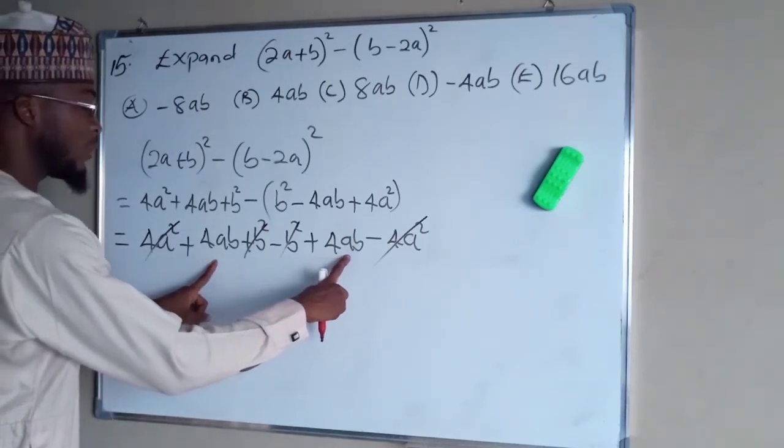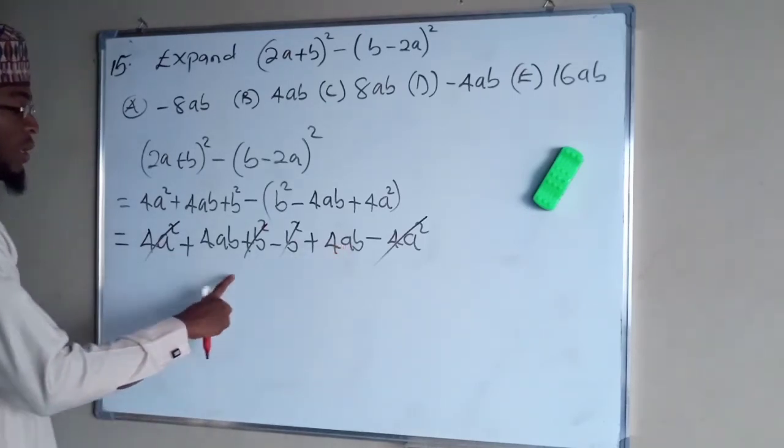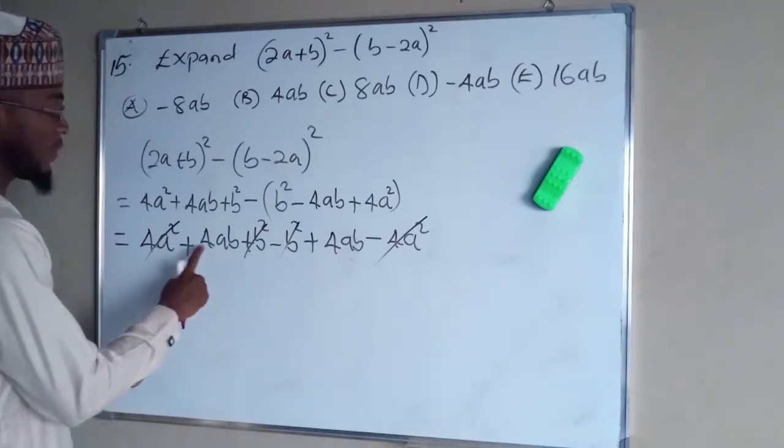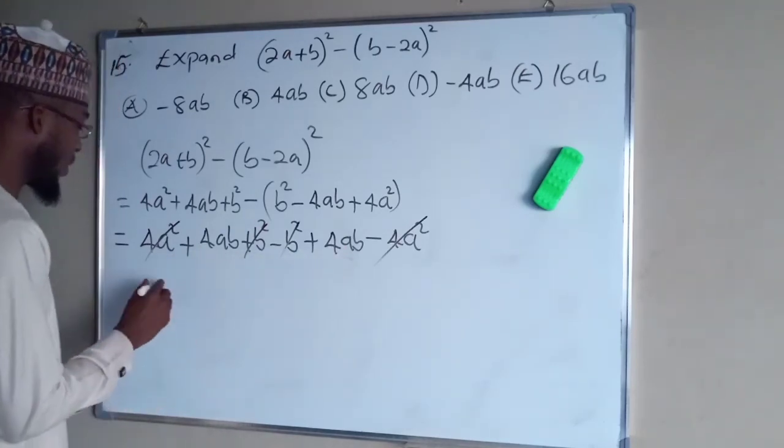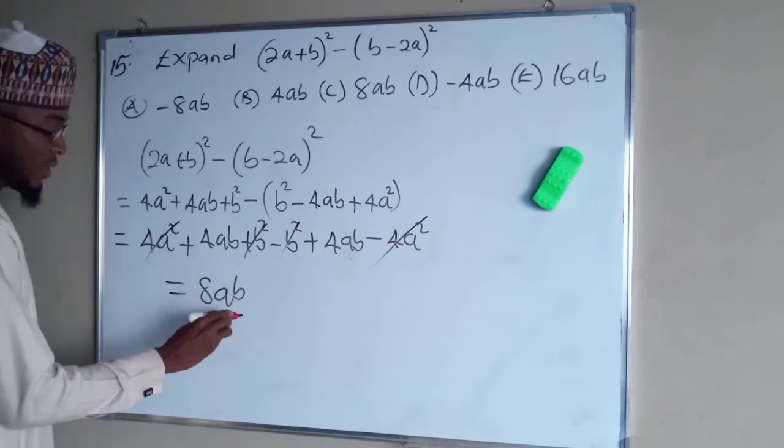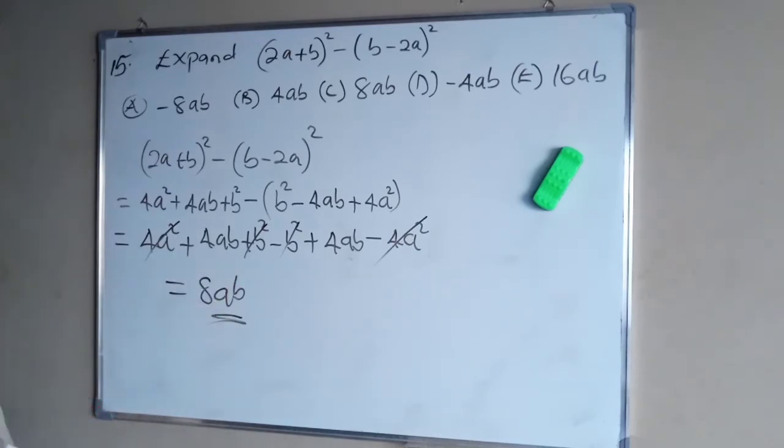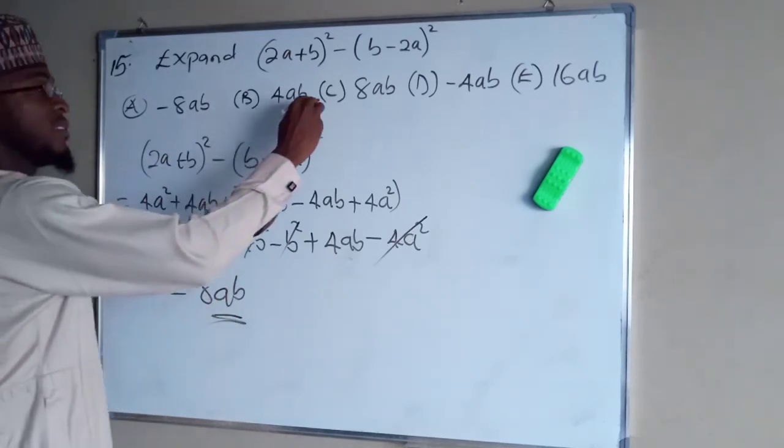We are only left with 2 terms which correspond to one another making 8 of them: 4ab plus 4ab making 8ab. This is the final answer. And this is the right option.